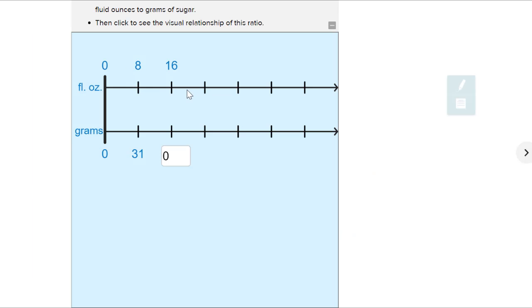So they're asking us how much sugar is in 16 fluid ounces. And if we know the ratio of 8 fluid ounces for every 31 grams of sugar, how can we find that for 16 fluid ounces? So what they're asking us really is to find the equivalent ratio here. So we know the ratio of 8 fluid ounces is to 31 grams of sugar, but they want us to find the equivalent one of 16 to how many grams of sugar?